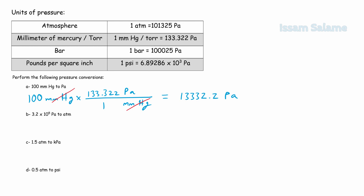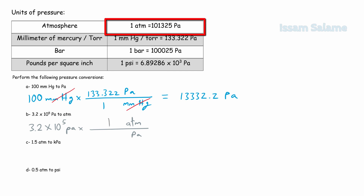Exercise B: convert 3.2 × 10⁵ Pascal to atmosphere. We start with 3.2 × 10⁵ Pa and multiply by a conversion fraction with Pascal in the denominator and atmosphere in the numerator — 1 next to atmosphere and 101,325 next to Pascal. Cancelling units and multiplying, the answer is 3.16 atmosphere.